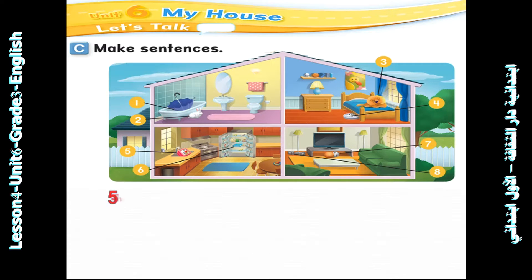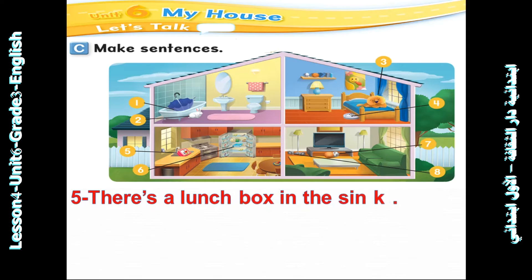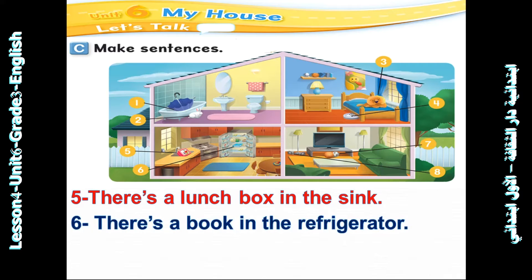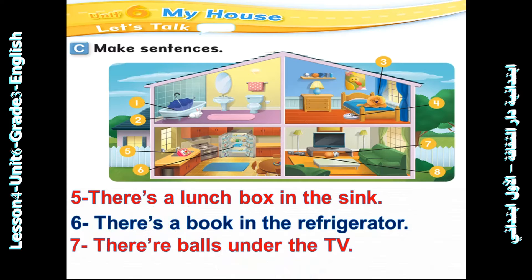Look at number five: There is a lunch box in the sink. Look at number six: There is a mop in the refrigerator. Number seven: There are poles under the TV.